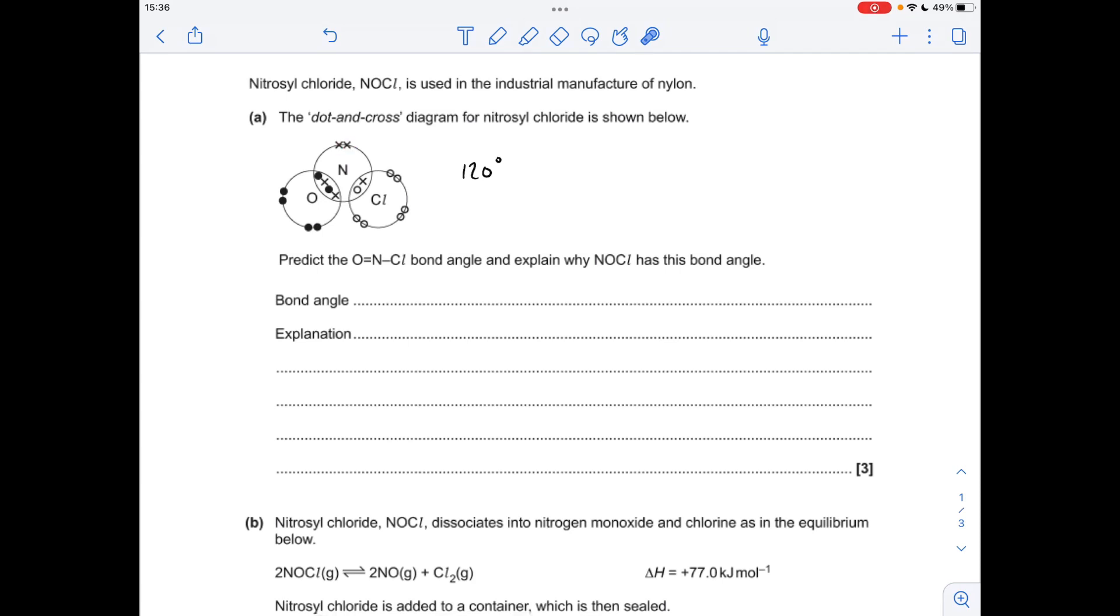We've got a lone pair and two bonding regions. Lone pairs repel more than bonding regions, so that's going to push the angle. It's going to put these two atoms close together, basically. And the rule of thumb is for each lone pair, you knock two and a half degrees off. So the angle we're going to say is 117.5 degrees. And there's my explanation.